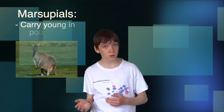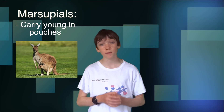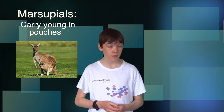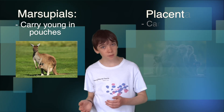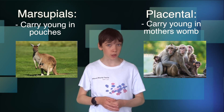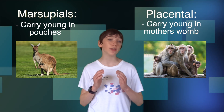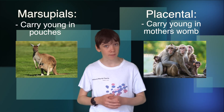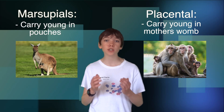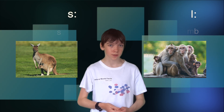Marsupials, which are mammals that carry their young in pouches, arrived in Oceania before the land split with Asia. Placental mammals, which carry their young in the mother's womb, dominated every other continent except Oceania, meaning there was no competition for the marsupials.